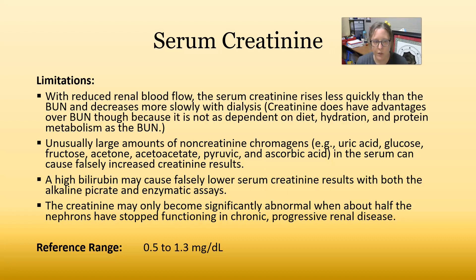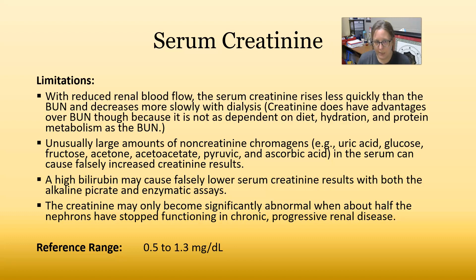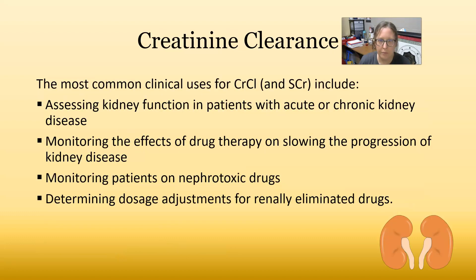Non-creatinine chromogens such as uric acid, glucose, fructose, acetone, acetoacetate, pyruvic acid, and ascorbic acid in the serum can all cause a falsely increased creatinine result. A high bilirubin can cause a falsely low serum creatinine result with both the alkaline picrate and enzymatic assays. Like BUN, creatinine may only become significantly abnormal when about half the nephrons have stopped functioning, so these tests don't detect abnormalities until significant kidney function is already lost. The reference range for serum creatinine is 0.5 to 1.3 milligrams per deciliter.